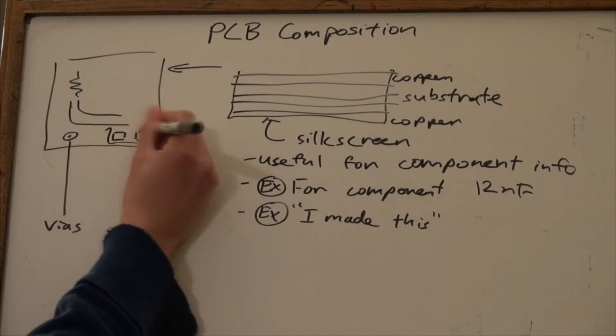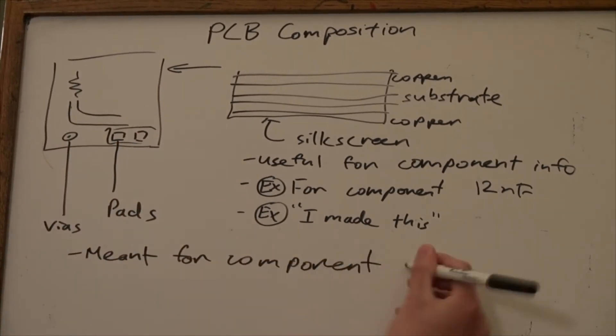The most common components you'll find for PCBs are through-hole and surface-mount components.